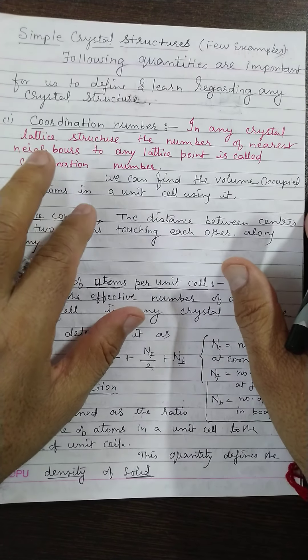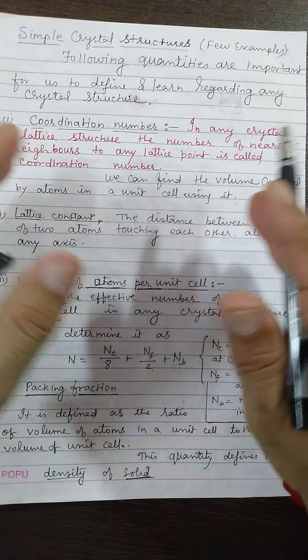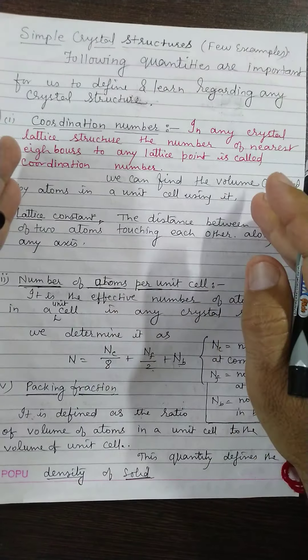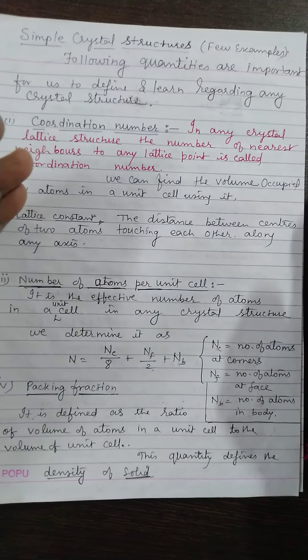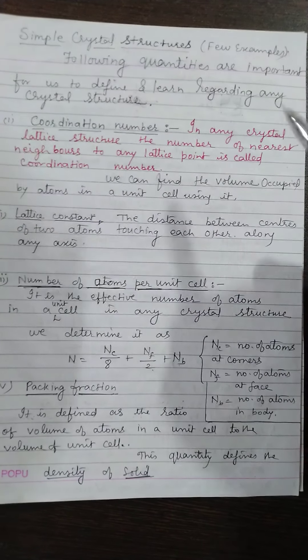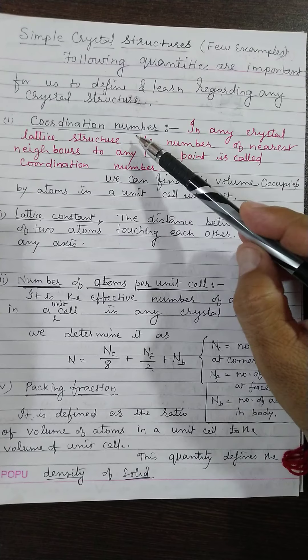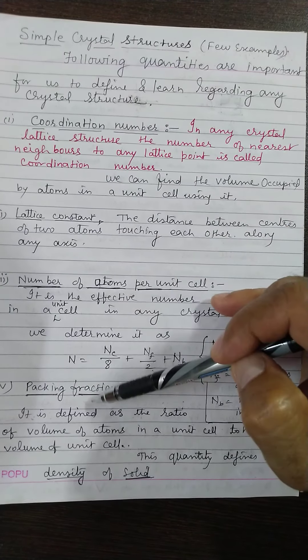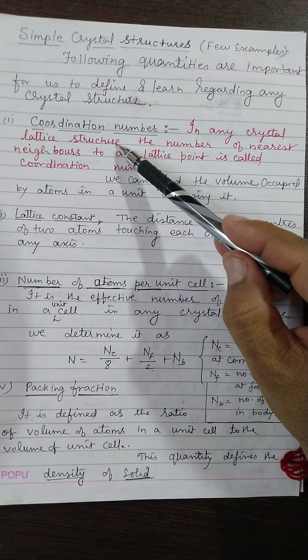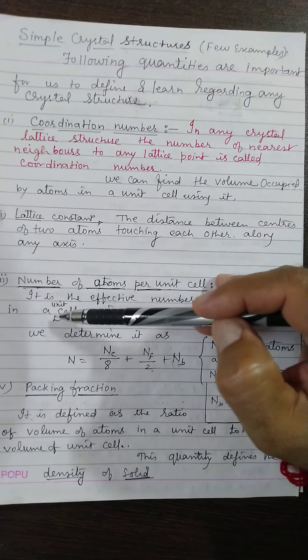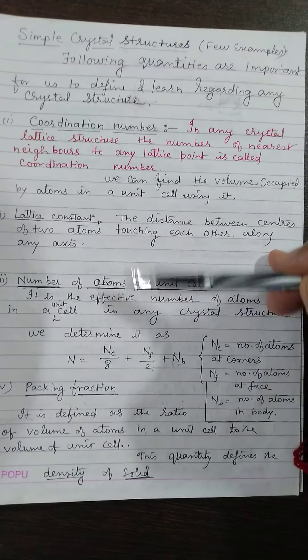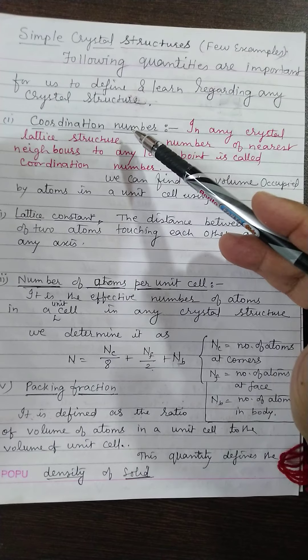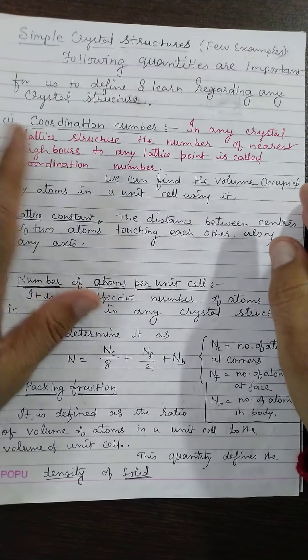Today, we will start discussing the different crystal structures, particularly the simple cubic and the other cubic structures. My main emphasis will be to tell you about the structure and to determine these parameters like coordination number, lattice constant, packing fraction, and primitive cell parameters.